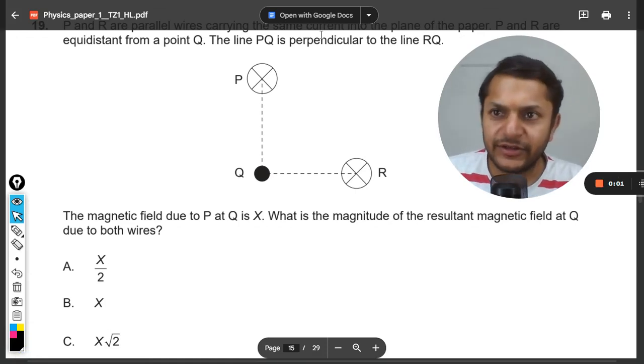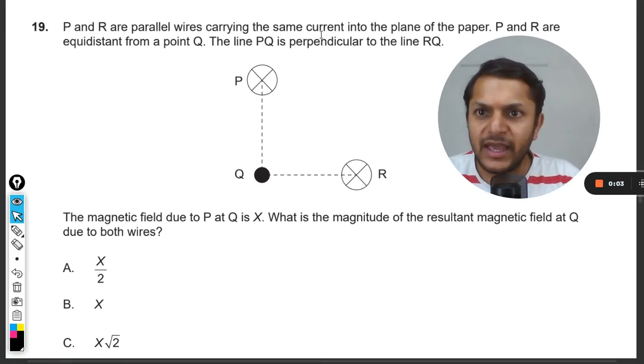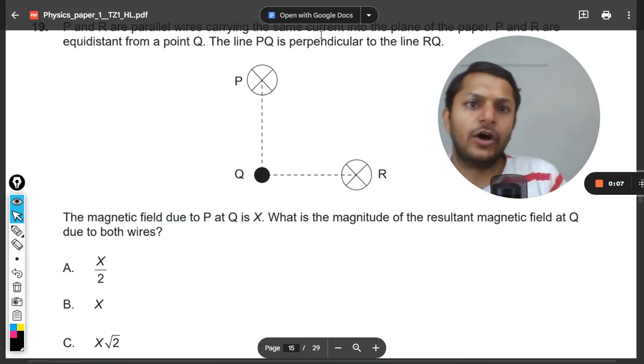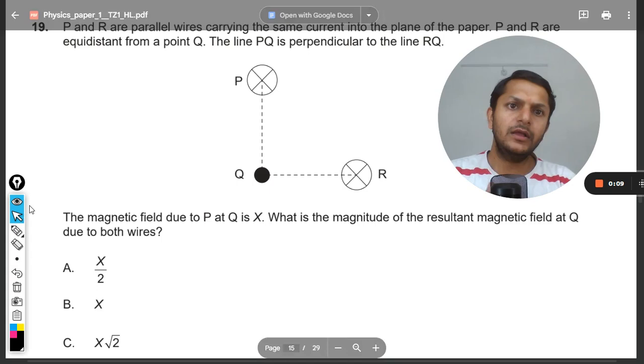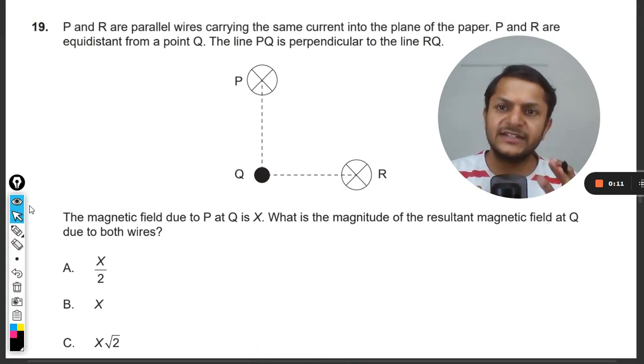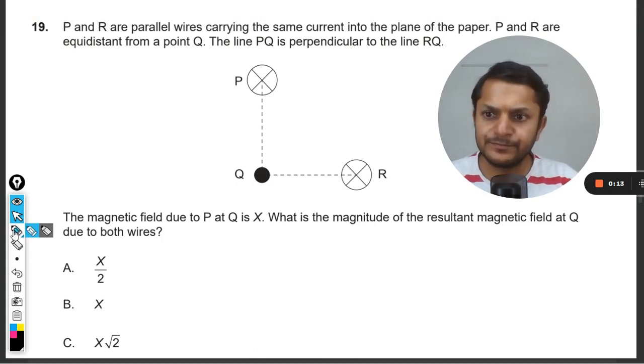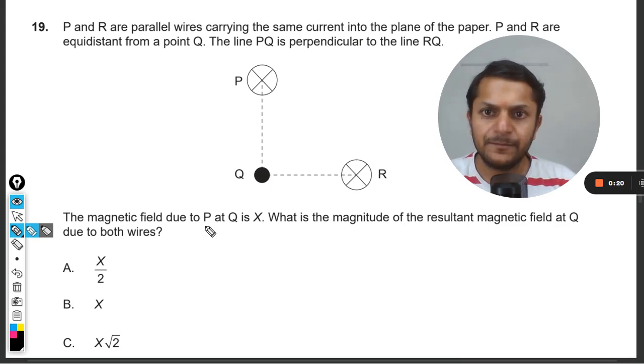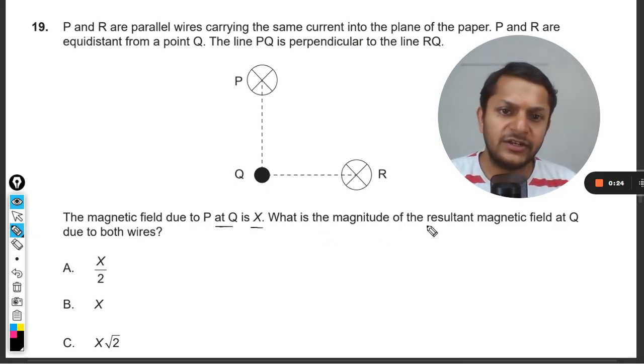Okay yes students, let us see what is there in this question. P and R are parallel wires carrying the same current into the plane of paper. P and R are equidistant from point Q, the line PQ is perpendicular to line RQ. The magnetic field due to P at Q is X. What is the magnitude of the resultant magnetic field at Q due to both wires?